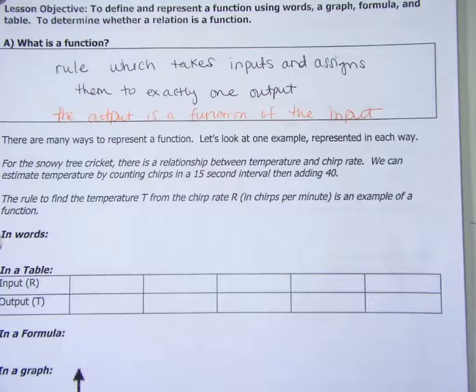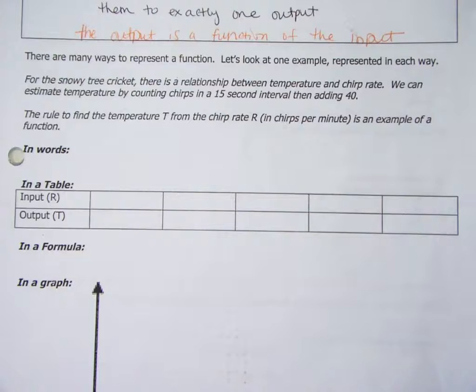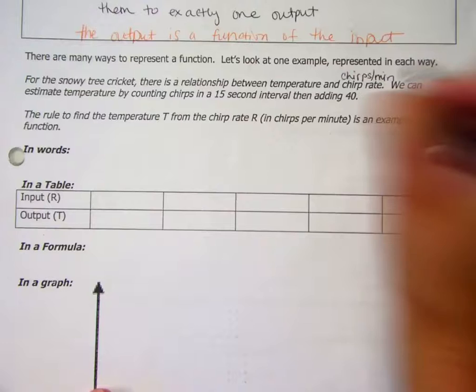One thing that we need to understand are the ways to represent a function. We can represent it in words, in a table, in a formula like an equation, or in a graph. So the example that we are going to represent in those four ways is kind of bizarre. There is this cricket, a snowy tree cricket, and there's a relationship between the chirp rate and the temperature.